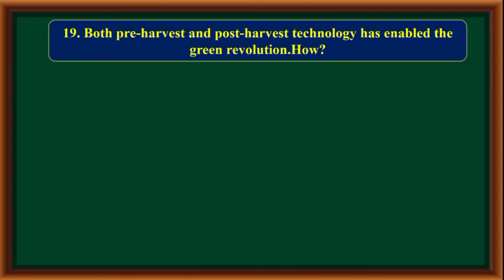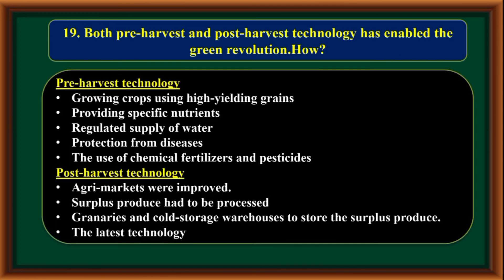Both pre-harvest and post-harvest technology have enabled the green revolution. Pre-harvest technology includes growing crops using high-yielding grains, providing specific nutrients, regulatory supply of water, protection from diseases, and the use of chemical fertilizers and pesticides. Post-harvest technology includes improved agri-markets, processing of surplus produce, and post-harvest granaries and cold storage warehouses to store the surplus produce with the latest technology.